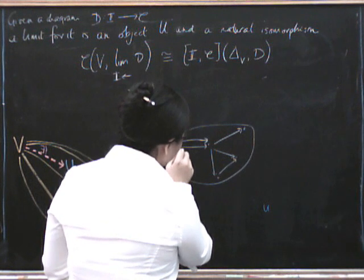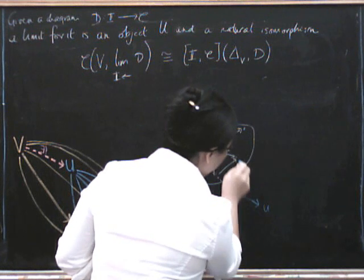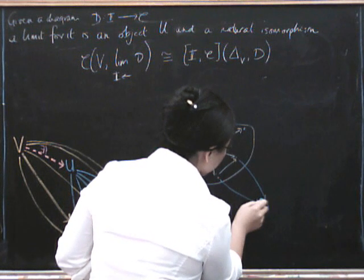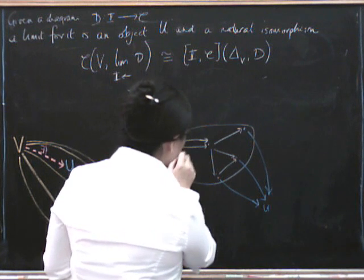Which means it's going to be an object together with morphisms away from the diagram whose limit we're taking. So again, for every object in the diagram, we have a morphism to our vertex, like this, which I'm still drawing in blue, because this is going to be the universal one.